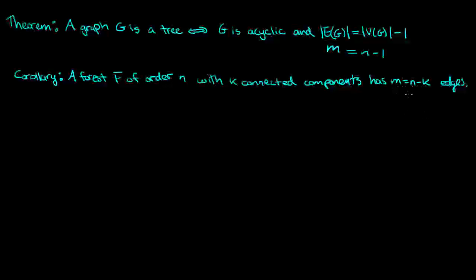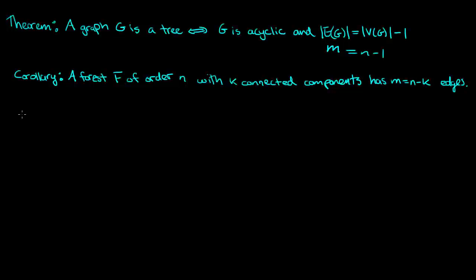If you think about the tree example, that's like a forest with only one connected component and then you have m equals n minus 1. To prove this, it's actually the exact same proof as before, but just a little more general with these k components. Now in this video what I actually want to do is prove a theorem very similar to the theorem at the top, but a little bit different. Before I do that, I want to tell you something about spanning trees.